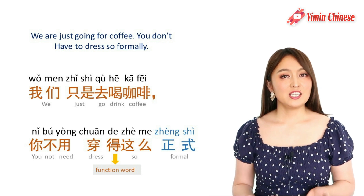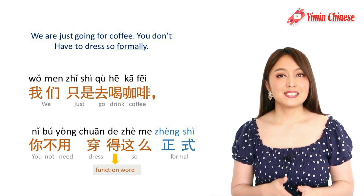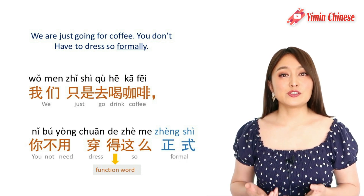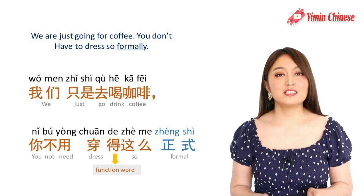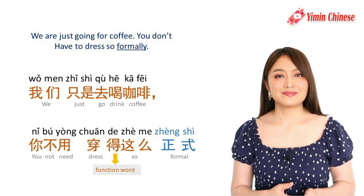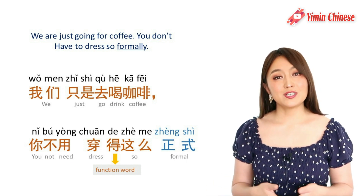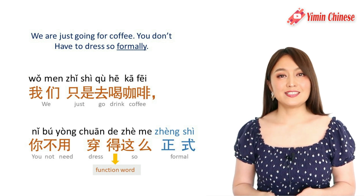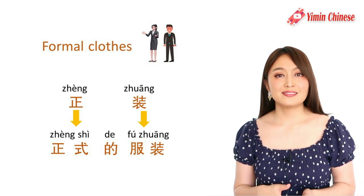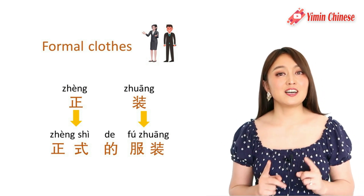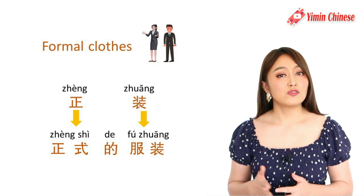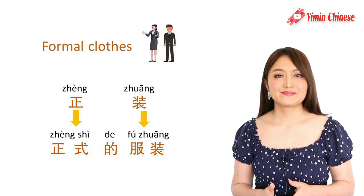For example: 我们只是去喝咖啡，你不用穿得这么正式 — We're just going for coffee, you don't need to dress so formally. To say formal clothes, you can use the short form 正装, which is short for 正式的服装.